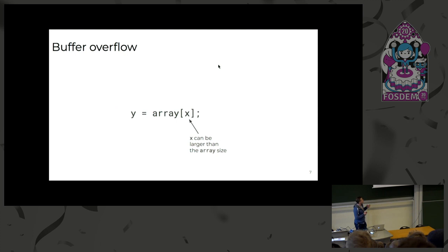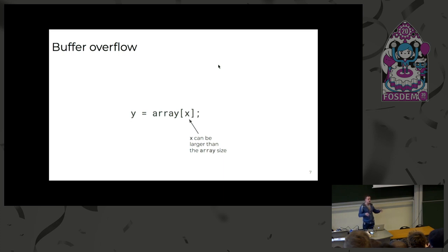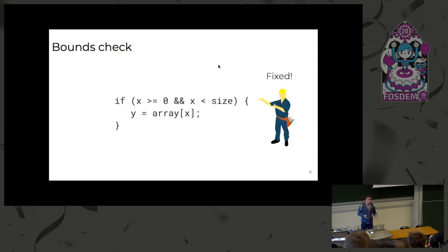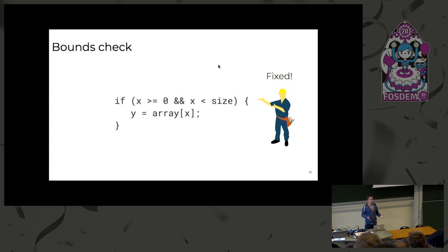To remind you how it works — here we have a normal buffer overflow. We have access to an array with an index. This index could be larger than the size of the array, and we would have an overflow reading memory outside the bounds. How do we normally fix it? We add a bounds check to verify whether this index is within the bounds of the array. This is applied in memory-safe languages and how we patch memory vulnerabilities in C and C++.